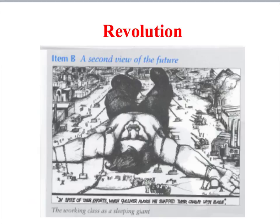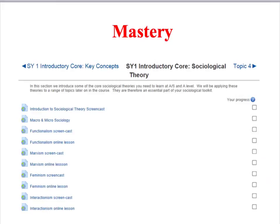Marxists argue that the working class constitute a sleeping giant, and that once they become aware of the true nature of their exploitation and overcome their false consciousness, they're in a position to overthrow capitalism and establish a new economic system based on the common ownership of the means of production — an economic system that Marx called communism. So we've finished our introduction to the Marxist perspective. Make sure you go on to iLearn and complete the online lesson on Marxism, which will help to reinforce and develop your understanding of this important perspective.